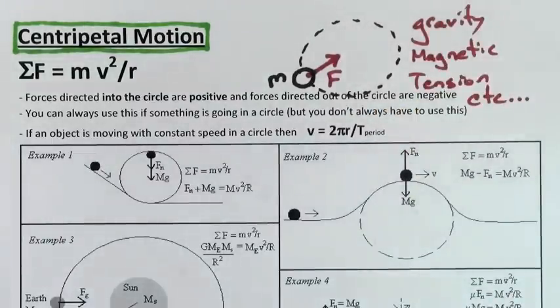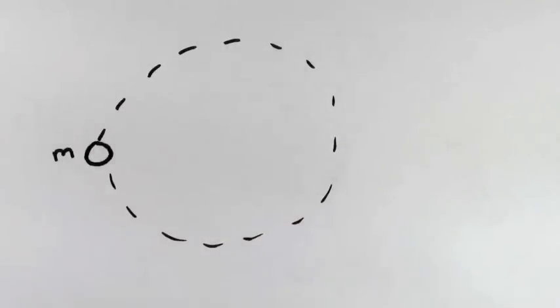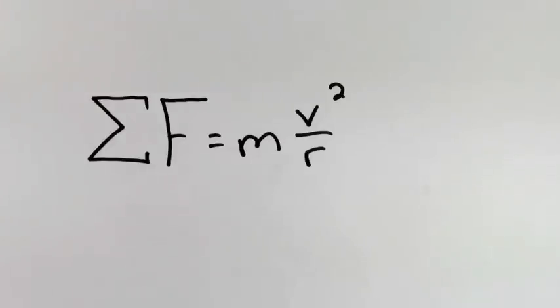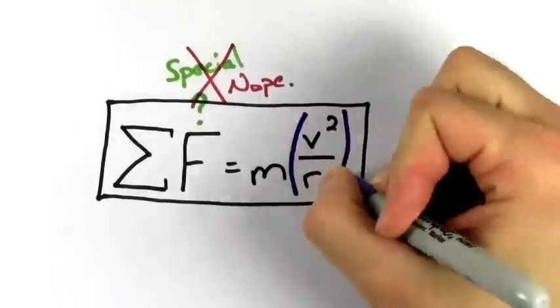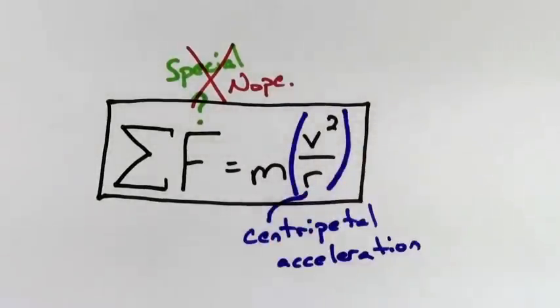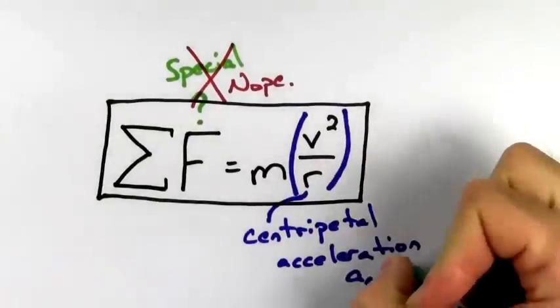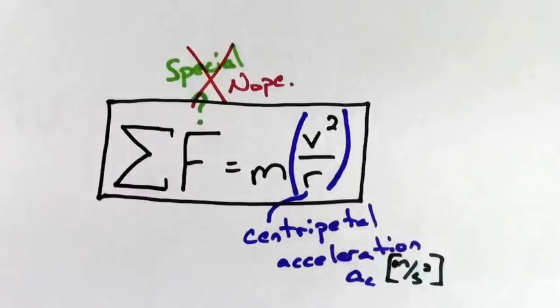So no matter what force is causing it, if a mass is going in a circle, don't forget to consider using this equation: sum of the forces equals mv squared over r. The v squared over r is just called the centripetal acceleration, and it's measured in meters per second squared just like any other kind of acceleration.